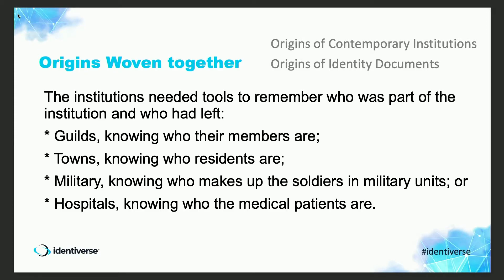Now that you're in institutions that are not kin-based, how do you know who belongs? I argue that you have the origins of these contemporary institutions and the origin of identity documents happening and feeding each other. When you're in a guild you have to know who the members are; when you're in a town you need to know who the residents are; when you're in the military the state needs to know who the soldiers are and how much you're paying them; and in a hospital you need to know who the medical patients are.